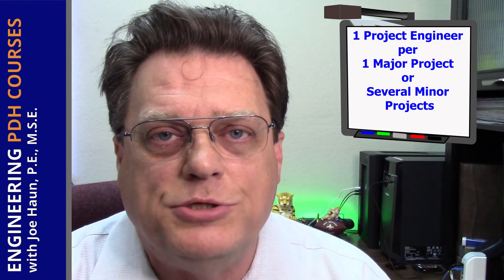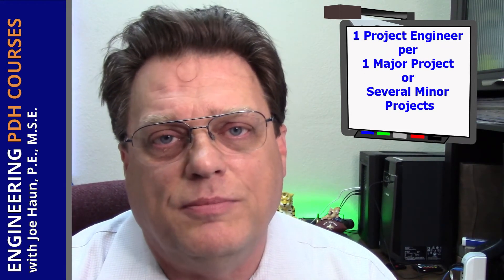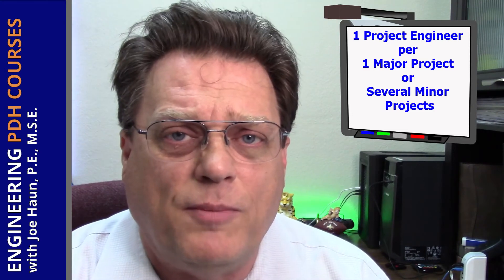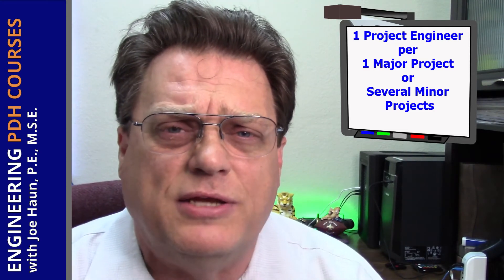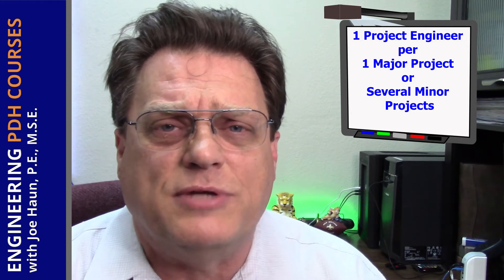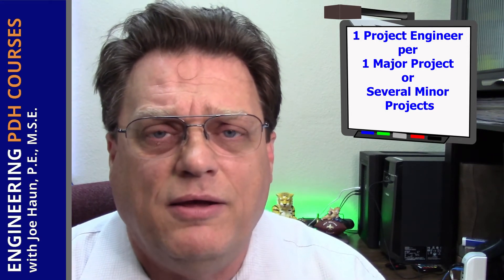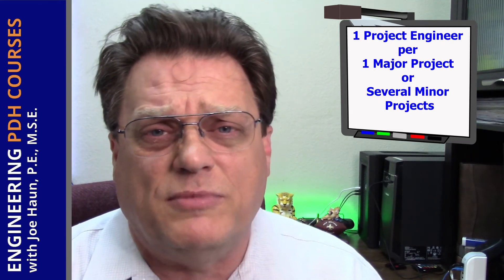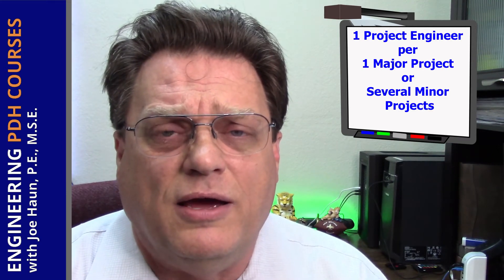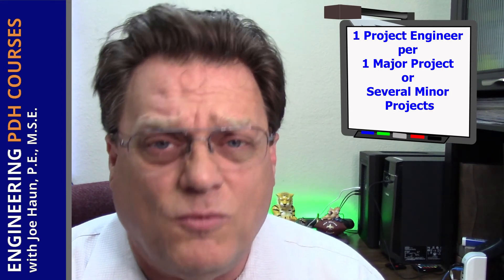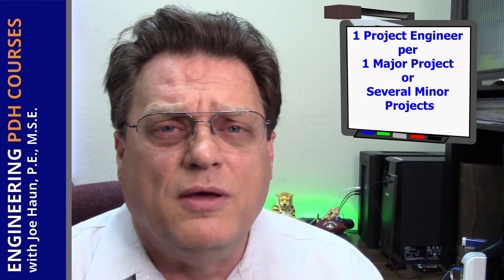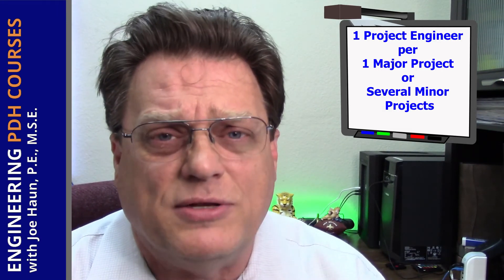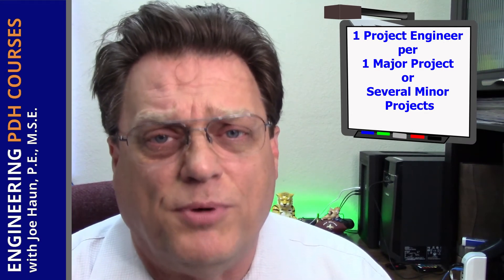Both are needed on any engineering business design team. There should be at least one project engineer per major project. A project engineer can handle several minor projects — jobs that don't take very long — perhaps 10 to 15 projects at once. But when it's a large project, such as a thousand-acre design of a master plan community, it's one project engineer per project. In the field, since the project engineer has to be on site all the time, there's typically one project engineer per project.